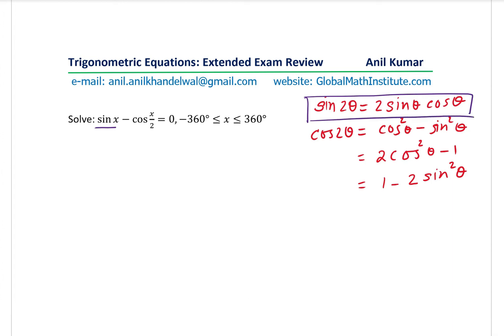So the question here is sin x minus cos of x by 2 equals 0. I am writing sin x as 2 sin x by 2 cos x by 2. Thereby, I got cos x by 2 as a common term. That's the beauty of this step. So I can now take cos x by 2 as a common term.